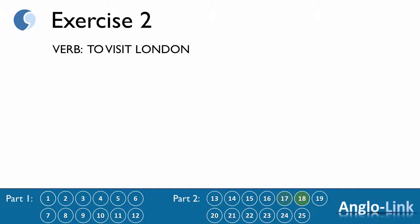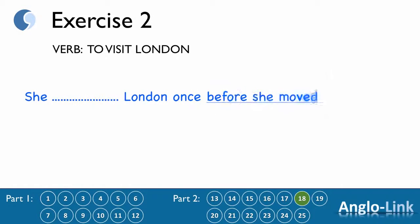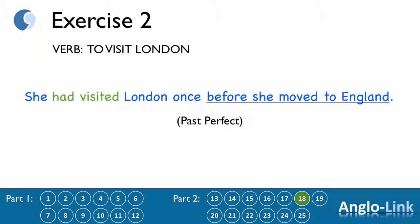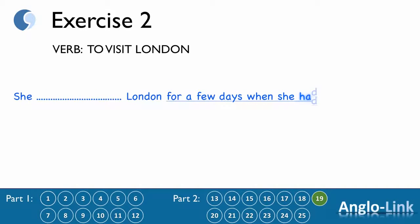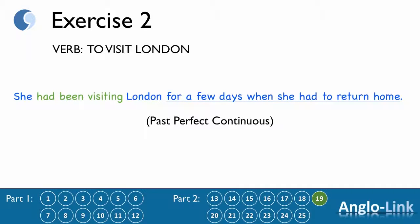Number 18: 'She ___ London once before she moved to England.' Answer: 'She had visited London once before she moved to England.' Past perfect. Number 19: 'She ___ London for a few days when she had to return home.' Answer: 'She had been visiting London for a few days when she had to return home.' Past perfect continuous.